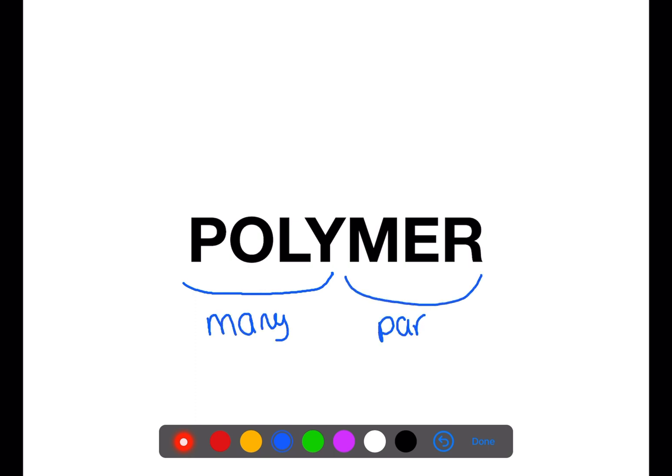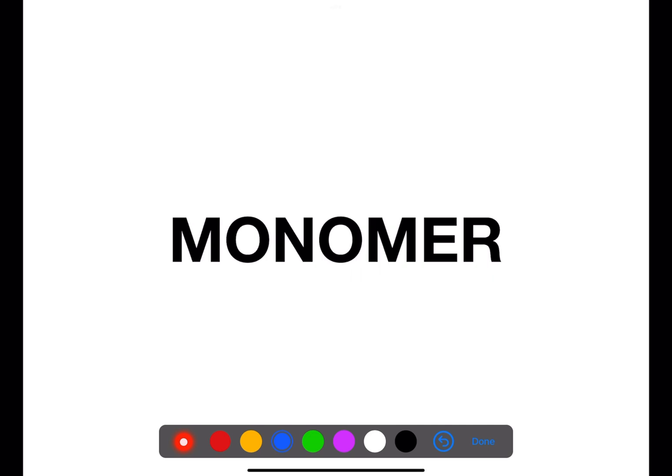The word polymer means many parts. The small parts which join together to make a polymer are called monomers. Monomer means one part.